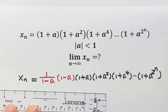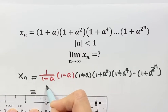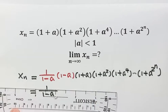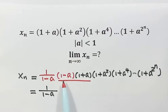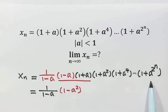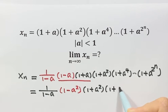Now we're going to simplify x_n. First, we combine the first two factors together. We see that (1 minus a) times (1 plus a) equals 1 minus a squared. Then we copy the rest of the sequence: 1 plus a squared, continuing until the last term.